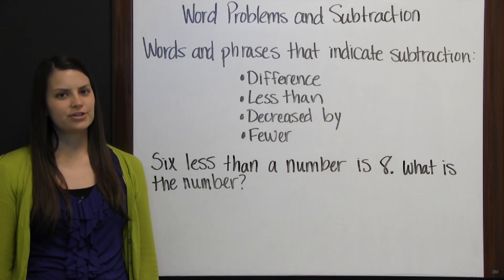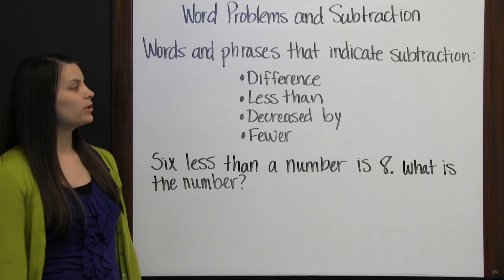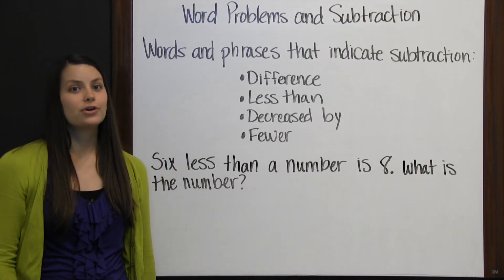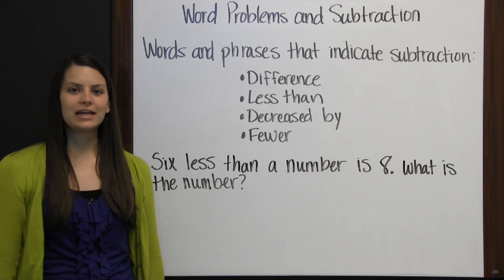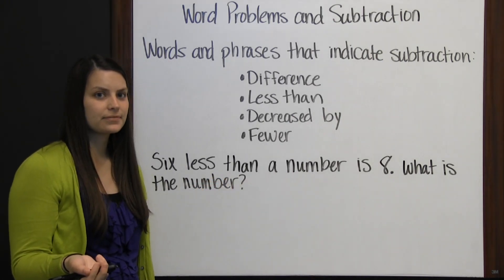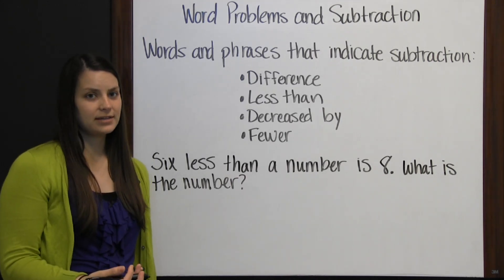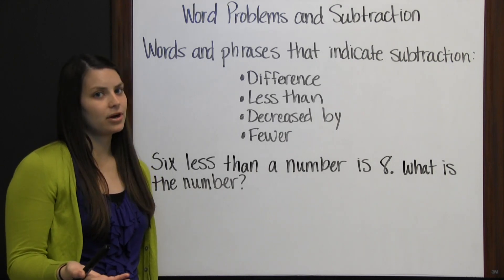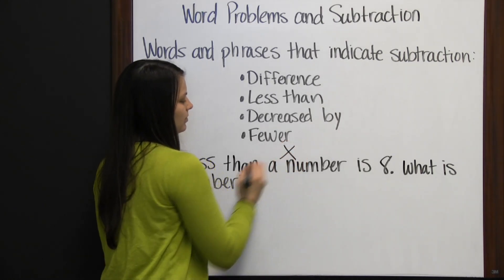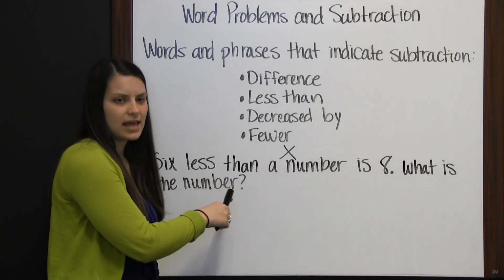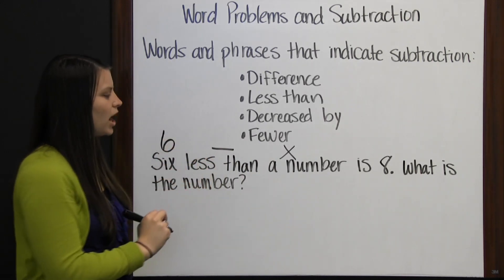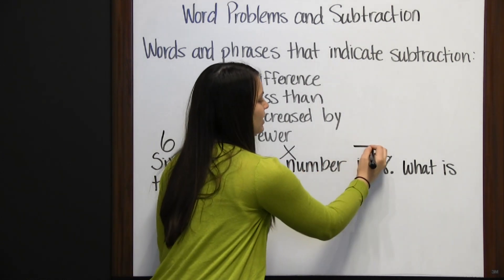Word problems and subtraction. When you read a word problem and see words like difference, less than, decreased by, or fewer, you know you need to subtract. Example: 'Six less than a number is eight. What is the number?' Since we don't know the number, we use a variable x. 'Less than' means to subtract, but reverse the order — like saying 'I have five dollars less than Jimmy' means Jimmy's money minus five. So 'six less than x' is x minus 6 equals 8.